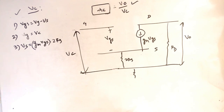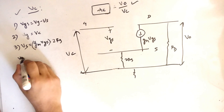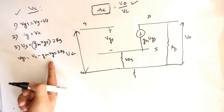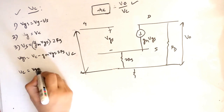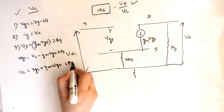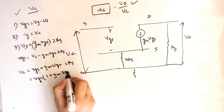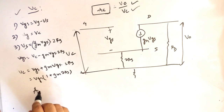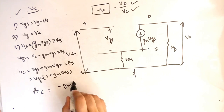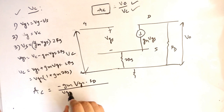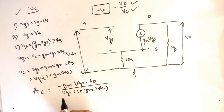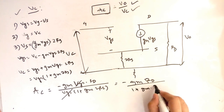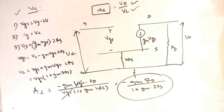Substituting into VGS = VG - VS: VGS = VC - GM·VGS·2RS. Rearranging, VC = VGS + GM·VGS·2RS = VGS·(1 + GM·2RS). Substituting into AC = VO/VC: AC = (-GM·VGS·RD) / (VGS·(1 + GM·2RS)). The VGS terms cancel, giving the final answer: AC = -GM·RD / (1 + GM·2RS). This is the common mode gain.